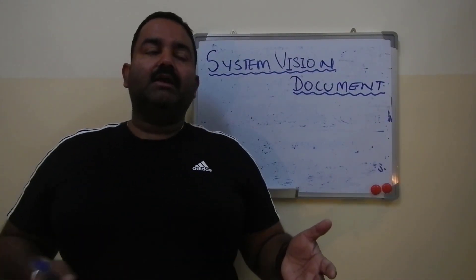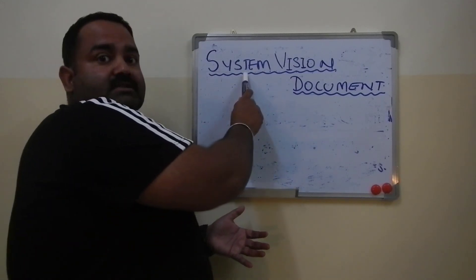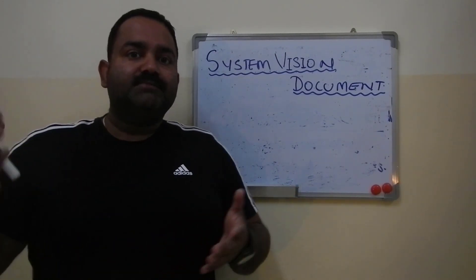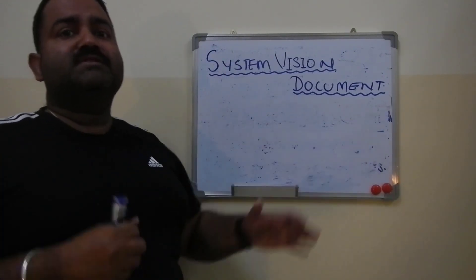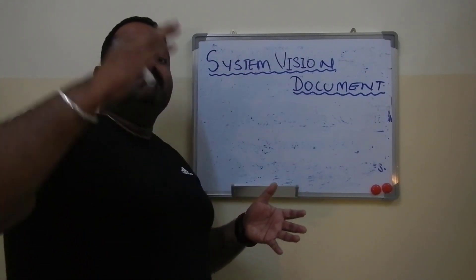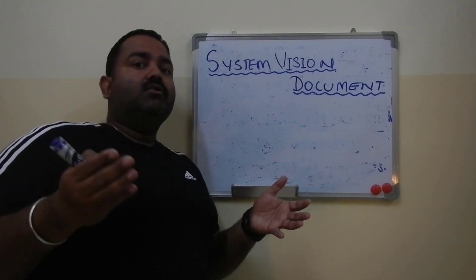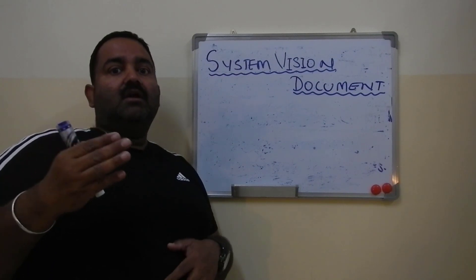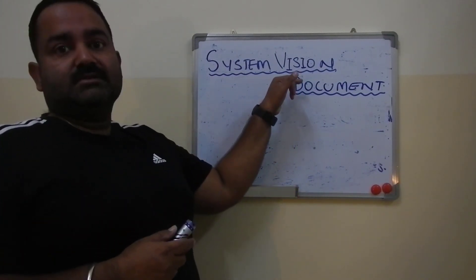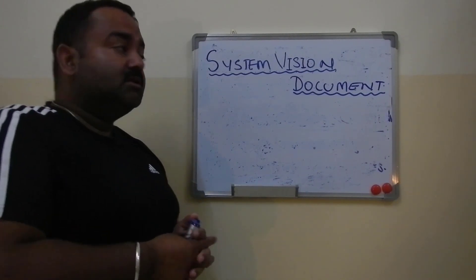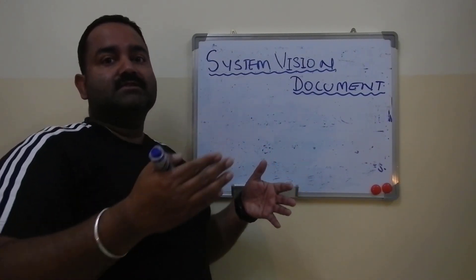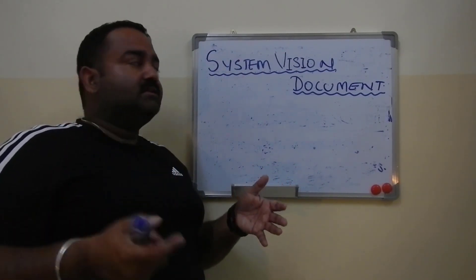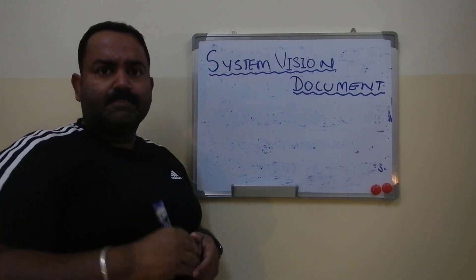Welcome to my channel. Today we are going to talk about the system vision document. Basically, what is a system vision document? It is a document which is used to present the idea of your system to the main stakeholders — the top management or the people who are going to fund and pay for our system. That idea is presented with the help of something called the system vision document.